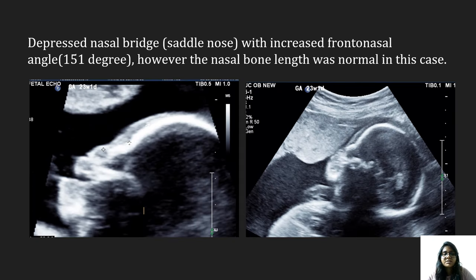Here we can see the depressed nasal bridge, which is known as saddle nose. Saddle nose means collapse of the nasal bridge with decrease in the nasal height. In this case, there was an increased frontonasal angle of 151 degrees. The normal frontonasal angle in 14 to 39 weeks of gestation is 126 plus or minus 7 degrees. However, in this case, the nasal bone length was normal.